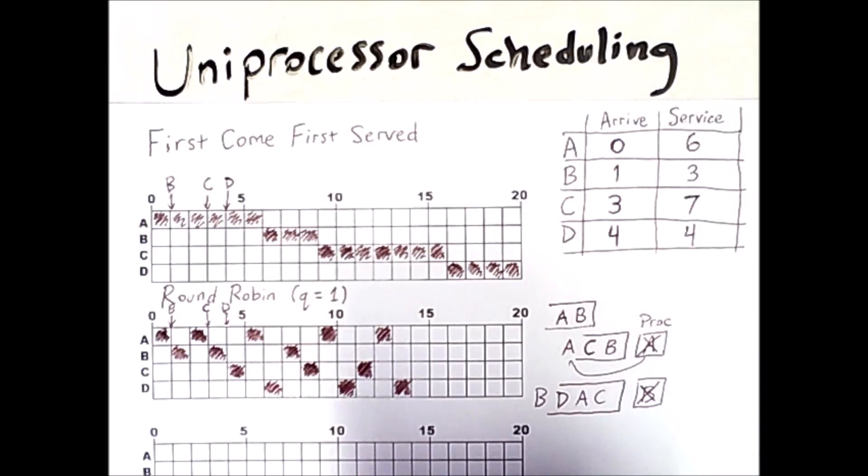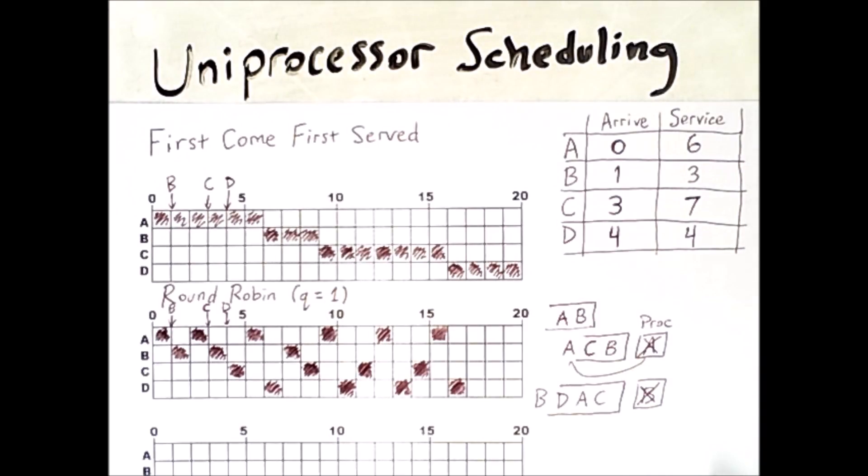C, A, D, C, A, D. And at this point A has completed one, two, three, four, five, six units of time. That is its service time. D has completed one, two, three, four units. And so they are both done.